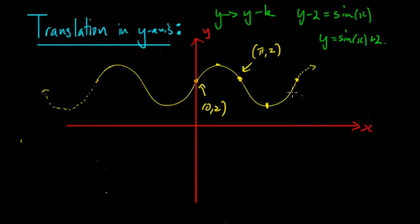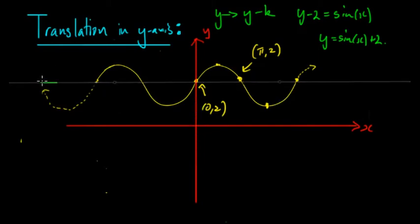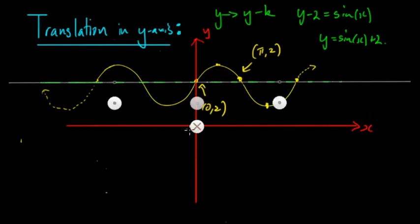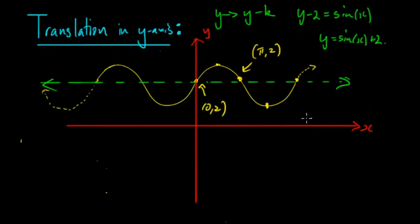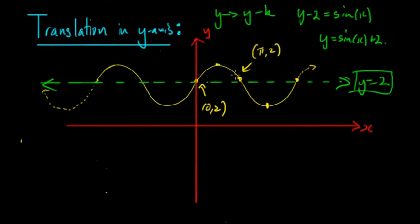A good way to think about graphing this is that there's a line of symmetry. The sine graph goes up and down along this line. When there's no translation in the y-axis, the line of symmetry is along the x-axis — you can go up and down and it's the same on the top and the bottom. But when you translate it up, this line of symmetry also moves up. So you have a line at y equals 2, and the sine graph goes up, hits that line, then goes down and reflects itself on the negative side.